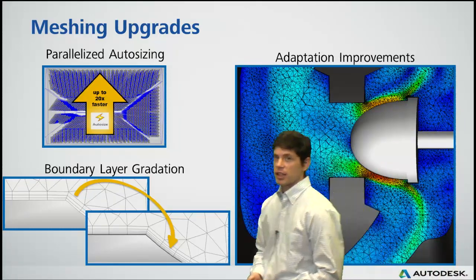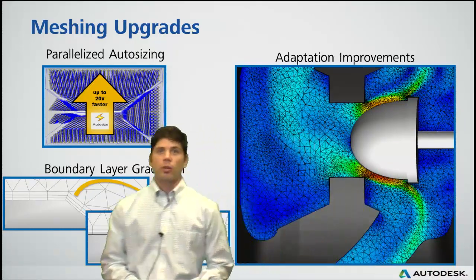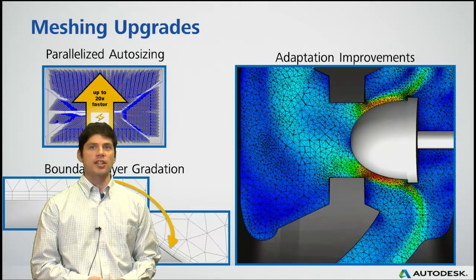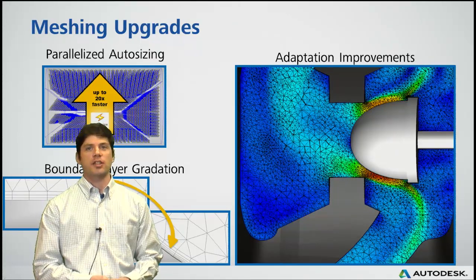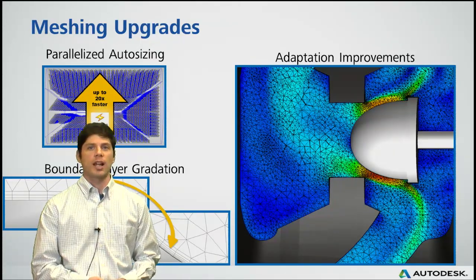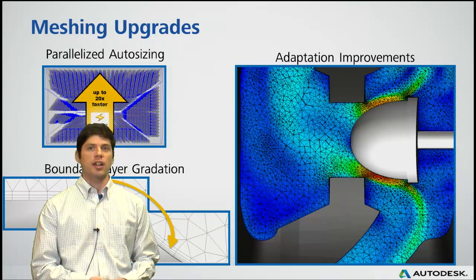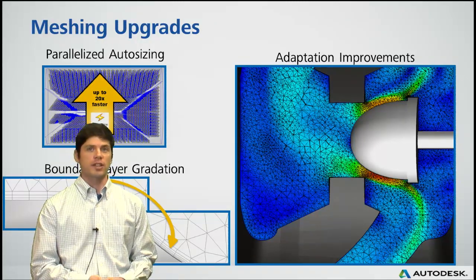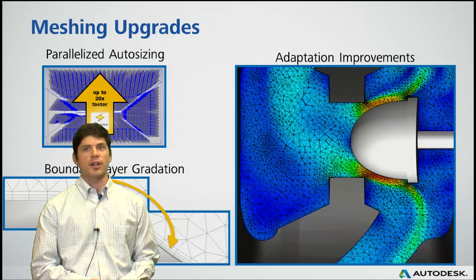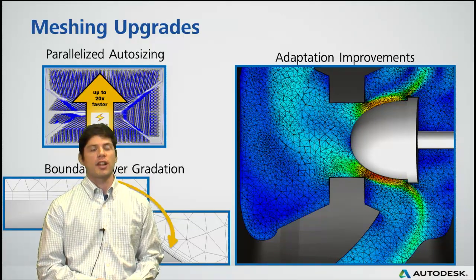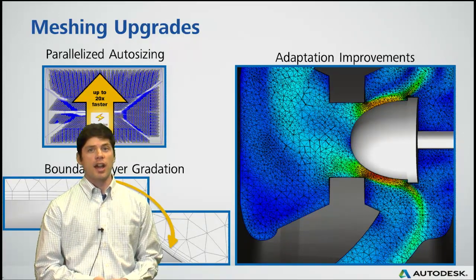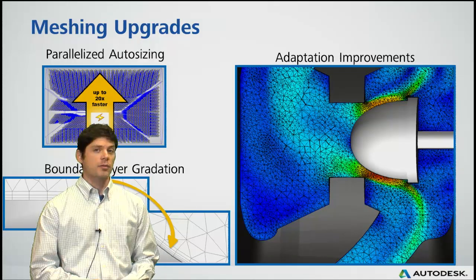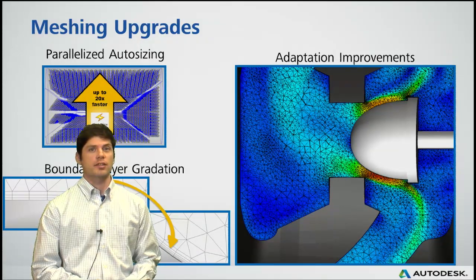Lastly, we also expanded what we're offering in the adaptation area. We introduced this capability last year and the response has been great, with people wanting to use it on more types of models. So we've extended it so that it works with material devices like fans, blowers, and resistances, as well as electronic devices like compact thermal models. On top of that, we also upgraded the entire adaptation algorithm so that it's more efficient than it was in the past.